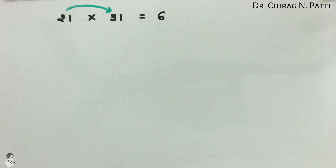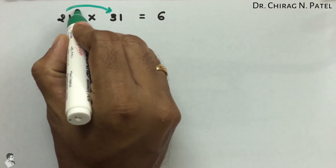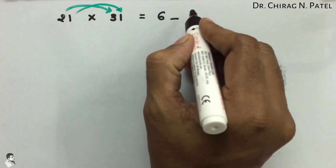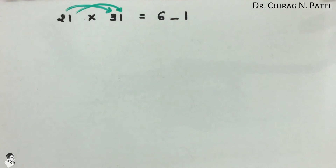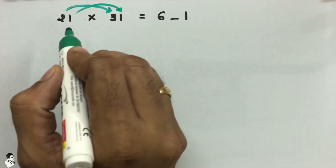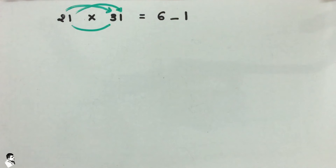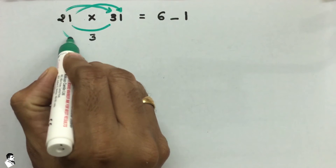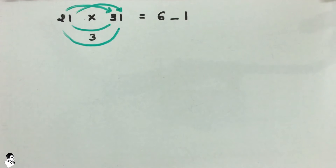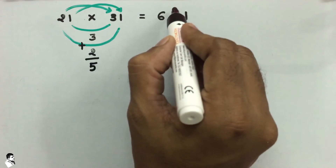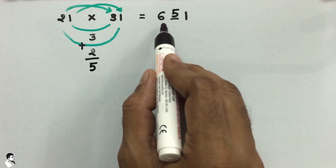In the second step, multiply 1 into 1, so the answer is 1. Make some space and write down 1 for the last digit. The middle number is calculated by multiplying 1 into 3 (that is 3) and 2 into 1 (that is 2), and the sum of these two is 5. So the middle number is 5, and the answer is 651.